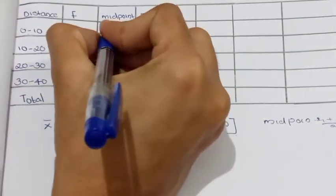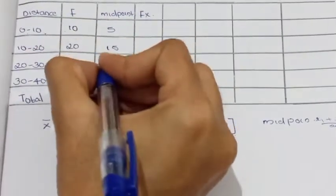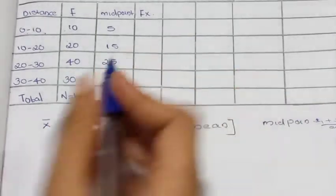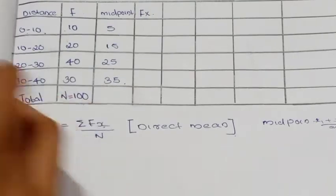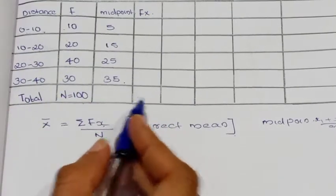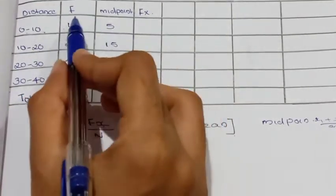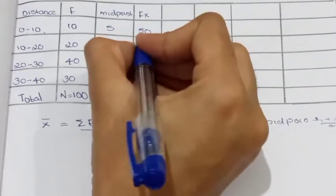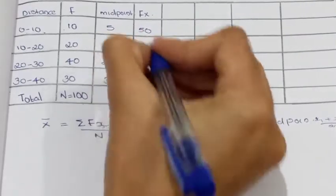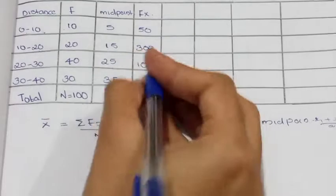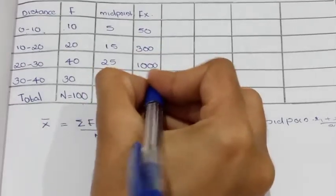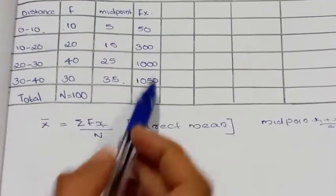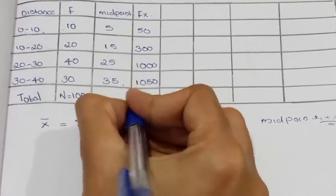The midpoints are 5, 15, 25, and 35. The total frequency is 100. Now we calculate fx: 10 into 5 equals 50; 20 into 15 equals 300; 40 into 25 equals 1000; 30 into 35 equals 1050. The sigma fx total is 2400.